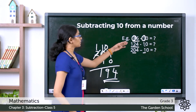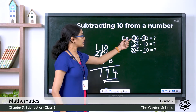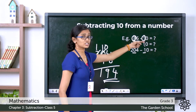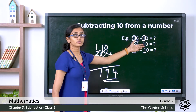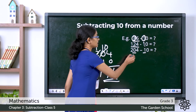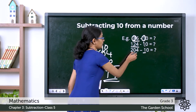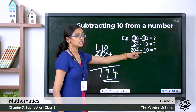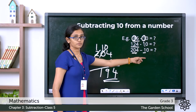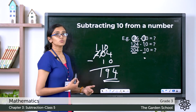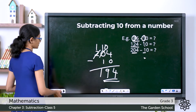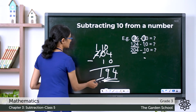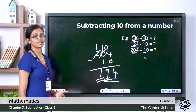So when the tens digit of the minuend is greater than or equal to the tens digit of the subtrahend, you don't have to regroup. But when the tens digit of the minuend is less than the tens digit of the subtrahend, which is 1, you have to regroup and find the difference. In that case, both the tens digit and the hundreds digit will change.